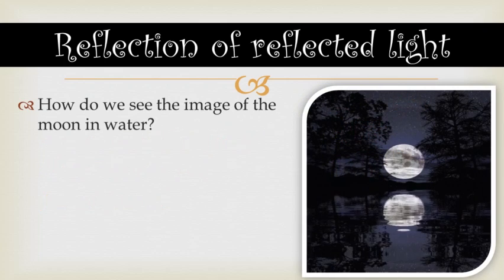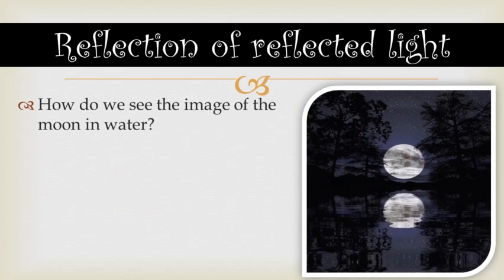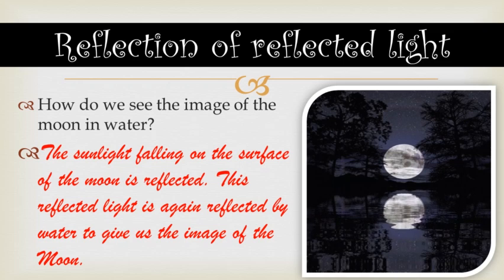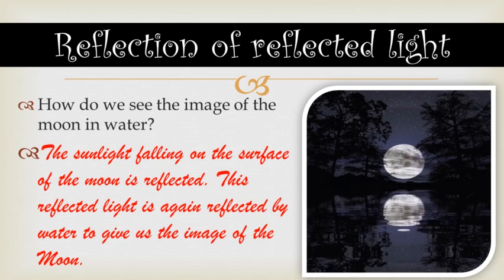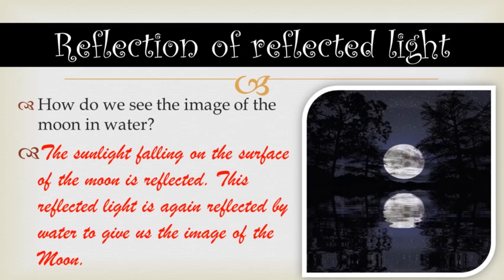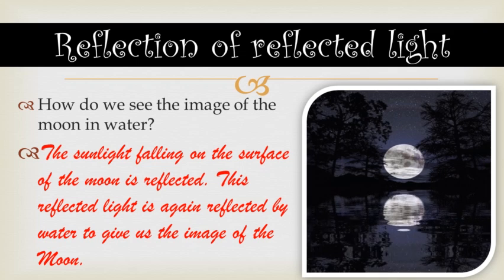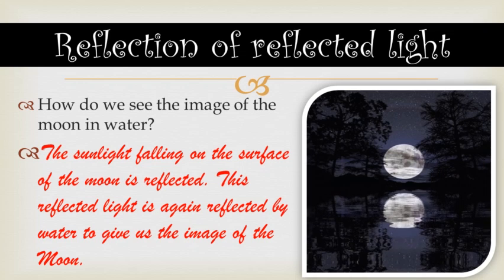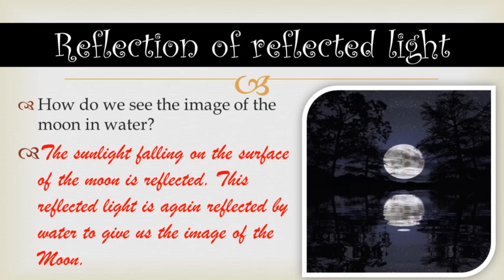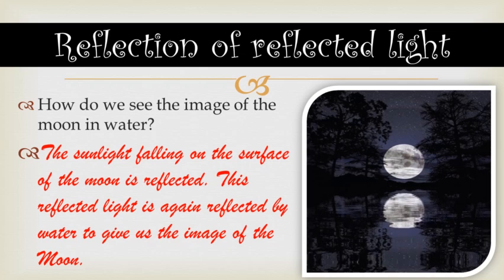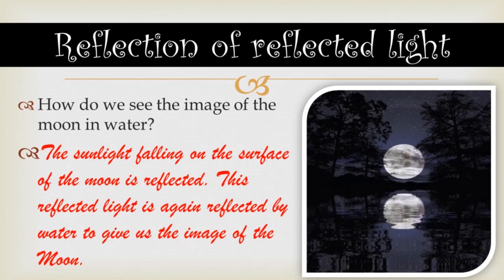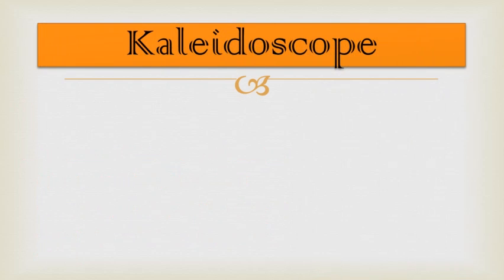Another example: how do we see the image of the moon in water? Since the moon is not self-luminous, sunlight falling on the moon's surface is reflected, and this reflected light is again reflected by water to give us the image of the moon. In this way, light can be reflected several times.